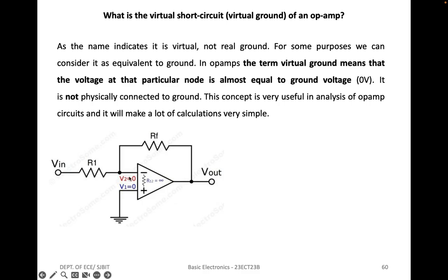In this circuit to understand virtual ground: internally, both the inverting and non-inverting input terminals are connected through the input impedance, which is infinite. Since the input impedance is infinite and V1 is connected to ground, V2 is approximately equal to zero. It can be considered that V2 is also at ground level. This means that physically one terminal is not directly connected to ground, but it can be seen as a virtual ground — connected internally.